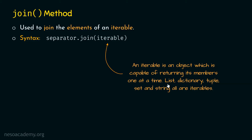List is also an iterable because we can access individual elements of a list. Similarly, dictionary, tuple, and set are also iterables. At this point we don't know what dictionary, tuple, and set are, but we will learn them in subsequent presentations. The goal of this lecture is to understand join method in detail, and we will consider list and dictionary data structures as examples of iterables.